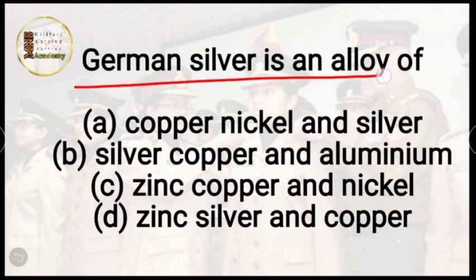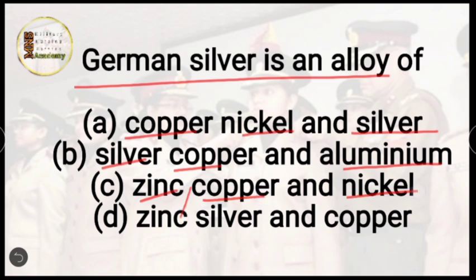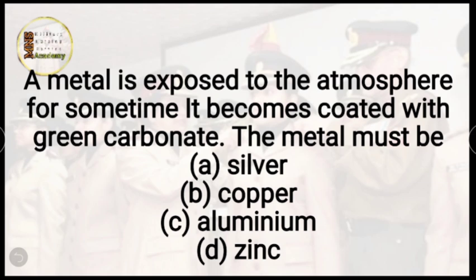Question 48 — German silver is an alloy of — copper, nickel and silver; silver, copper and aluminium; zinc, copper and nickel; or zinc, silver and copper? The correct answer is option C, zinc, copper and nickel.